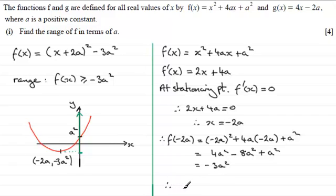So therefore, again, if we use this method, we know that the range for f(x) is basically f(x) is greater than or equal to minus 3a squared. So, I prefer this method for this one.